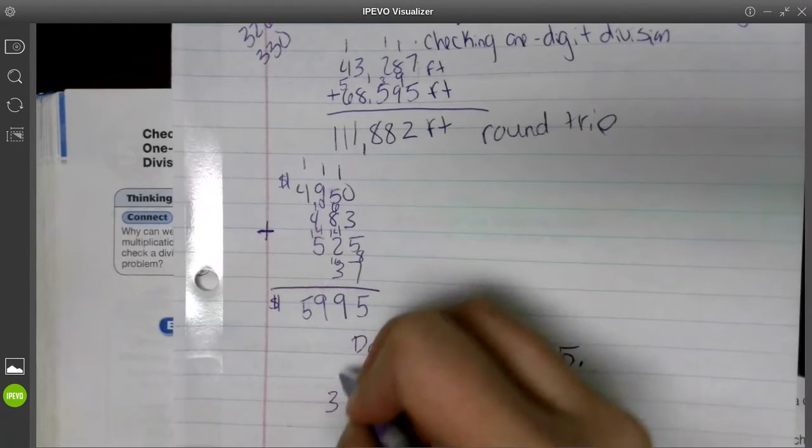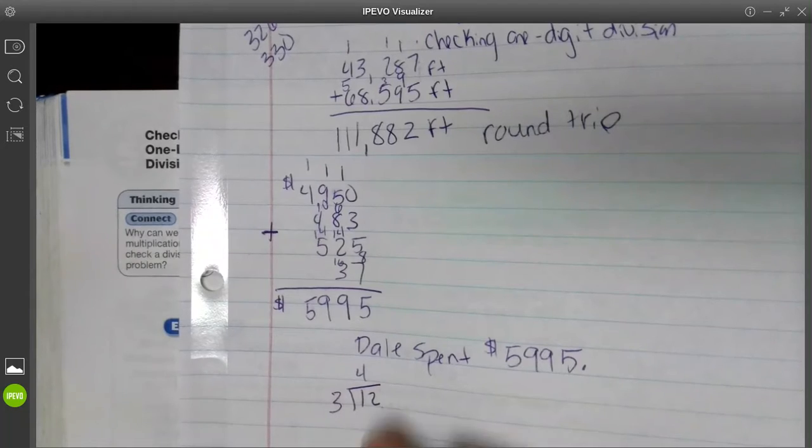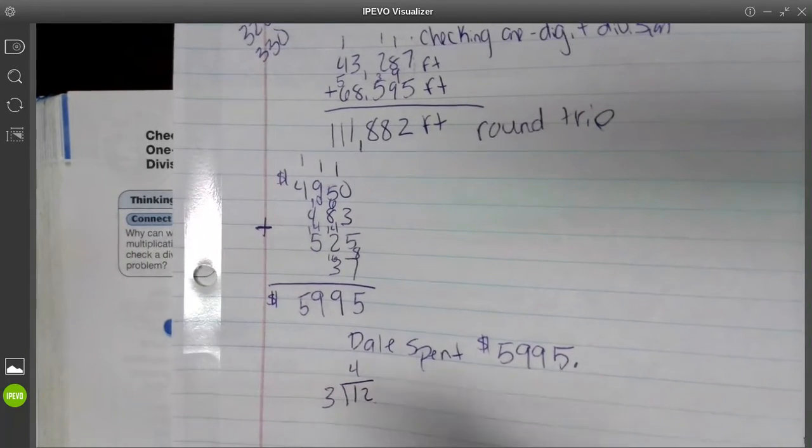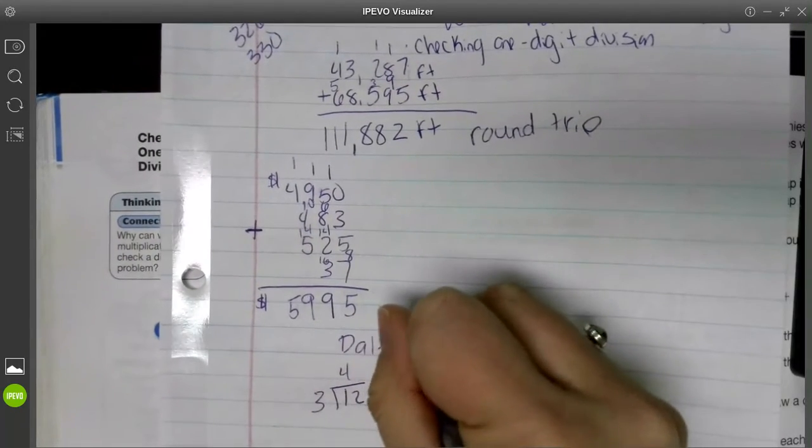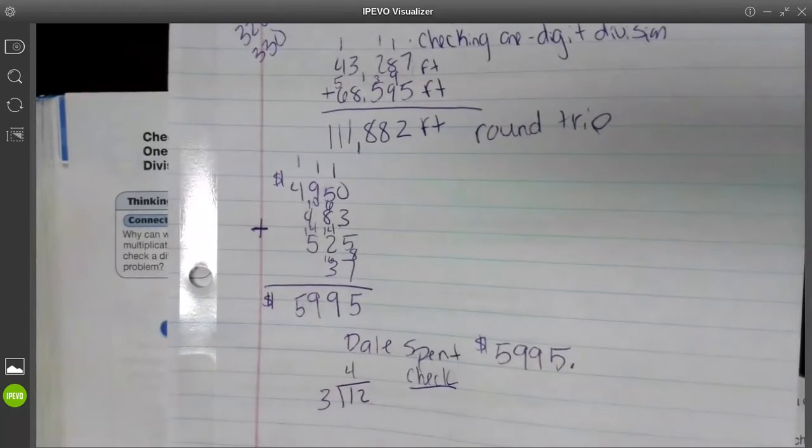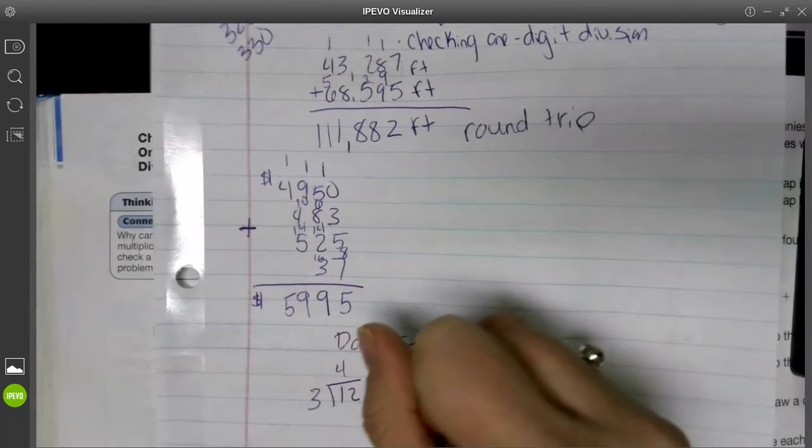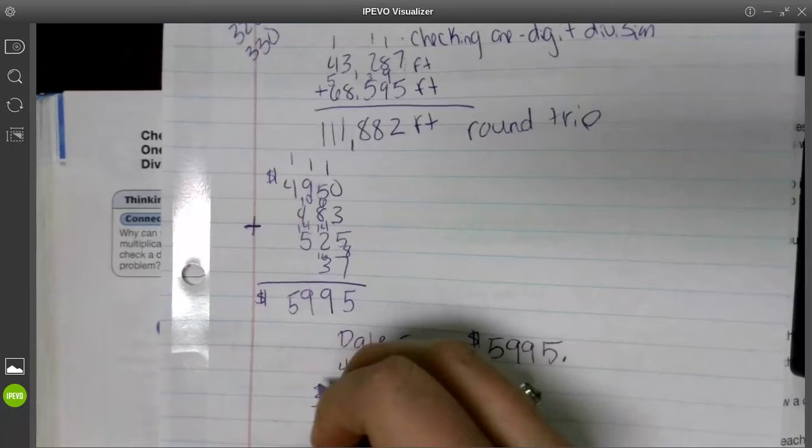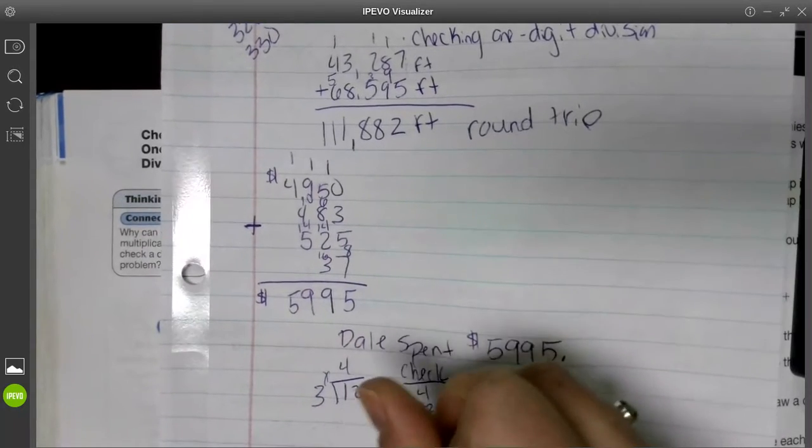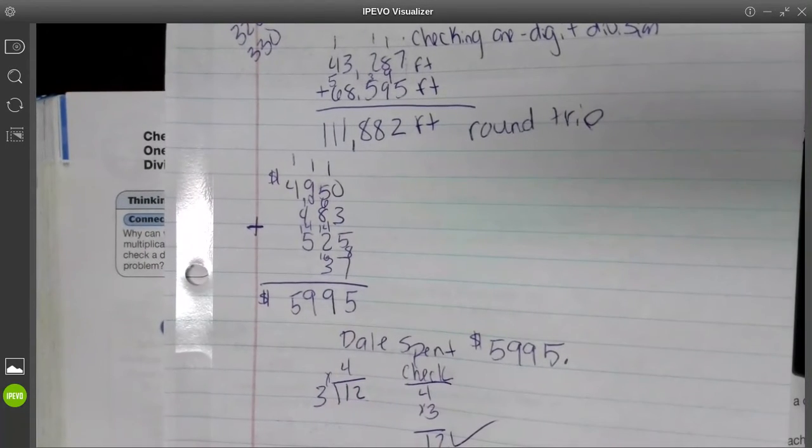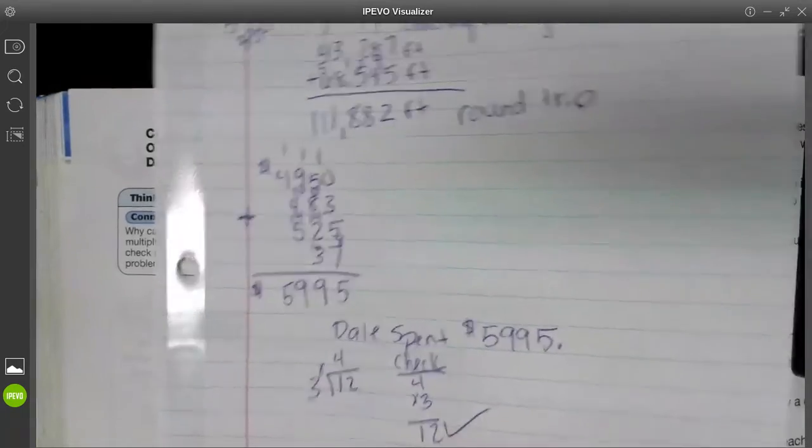So we have 12 divided by 3, and that is going to give us 4. And this is just a fact, so that's why we're not doing the whole process with it yet. So then we have to check our division problem. So 4, all you do is take this number and you multiply it by this number, and that is correct. So first you divide, then you check. We're going to do a couple more examples.